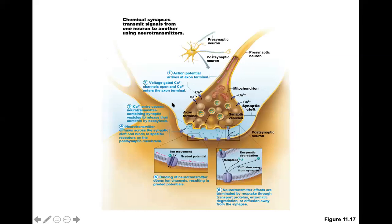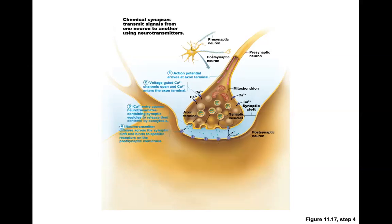This diagram goes over the events on the review sheet: the action potential comes down, you get an influx of calcium — that influx causes vesicles to undergo exocytosis, releasing the neurotransmitter. These bind to chemically-gated channels which open and you get depolarization. If the signal is strong enough, the depolarization hits threshold and you fire an action potential because all the voltage-gated channels have now opened.